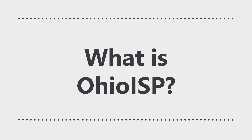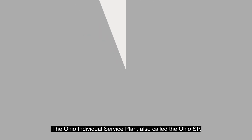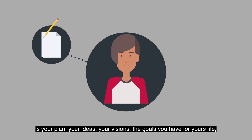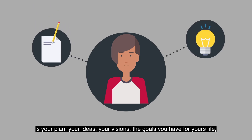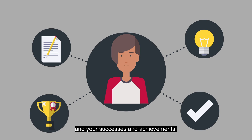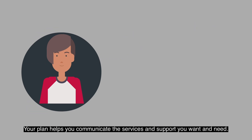What is Ohio ISP? The Ohio Individual Service Plan, also called the Ohio ISP, is your plan, your ideas, your visions, the goals you have for your life, and your successes and achievements. Your plan helps you communicate the services and support you want and need.